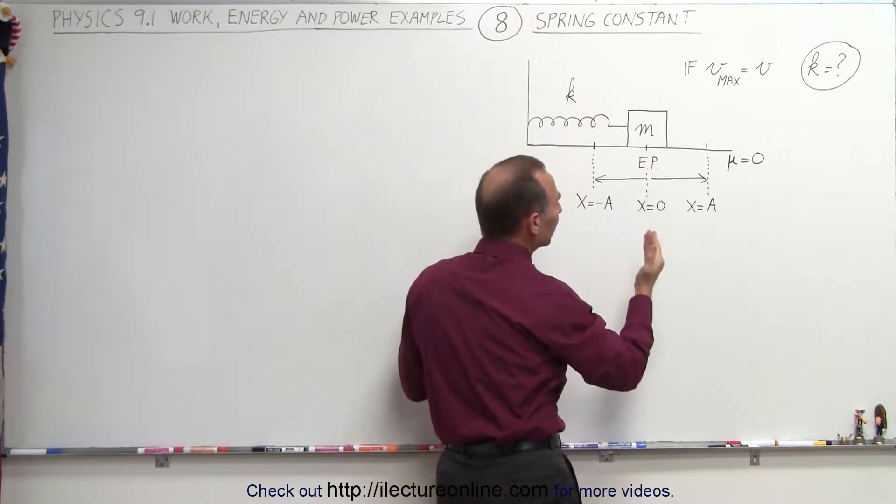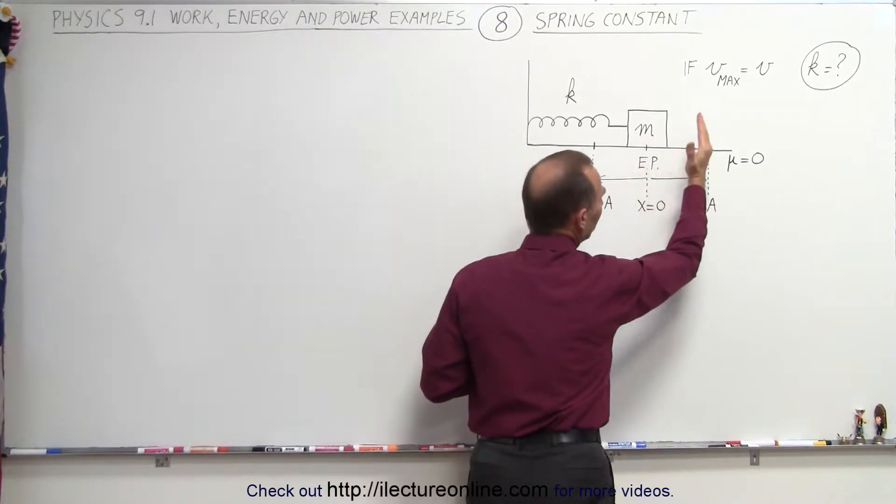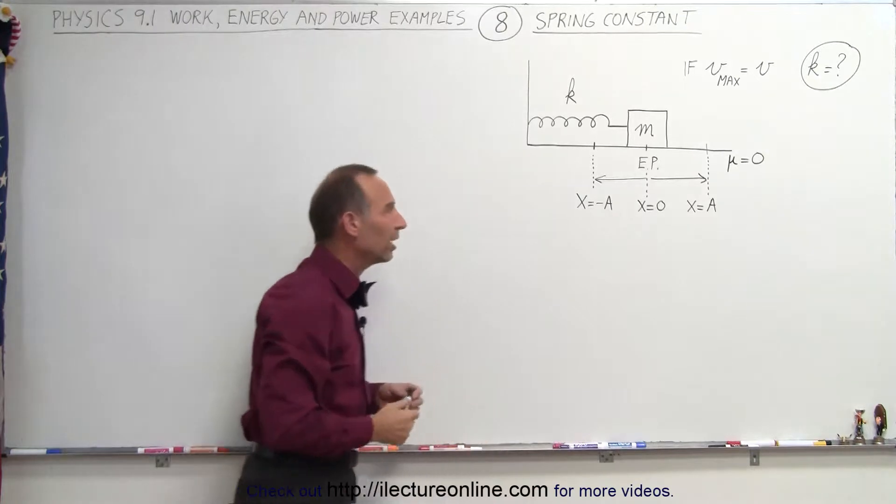The maximum velocity will be attained at the equilibrium point. The minimum velocity of zero will be obtained at either end of the maximum amplitude of the oscillation.